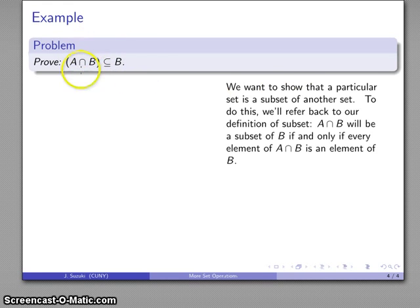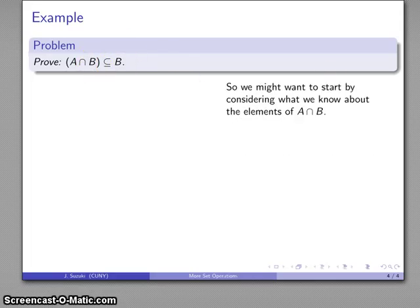So we want to show that everything in A intersect B is also going to be in B. Well, we might want to start by considering what we know about the elements of A intersect B. So every element of A intersect B...